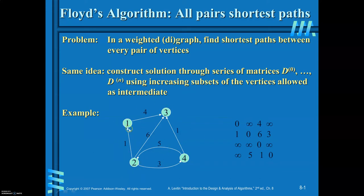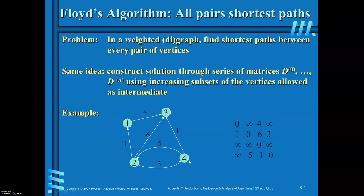For this graph: 1 to 1 is 0; 1 to 2 there is no edge, write infinity; 1 to 3 is 4; 1 to 4 is infinity. From 2: 2 to 1 is 1; 2 to 2 is 0; 2 to 3 is 6; 2 to 4 is 3. From 3 there is no outgoing edge, so infinity, infinity; 3 to 3 is 0; 3 to 4 is infinity. From 4: 4 to 1 is infinity; 4 to 2 is 5; 4 to 3 is 1; 4 to 4 is 0. This is the cost matrix.